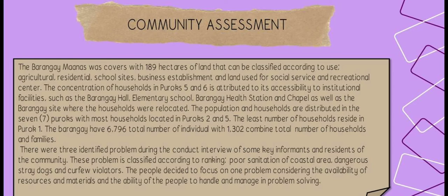Three problems were identified during the conduct and review with key informants and residents of the community, classified according to ranking. First is the poor sanitation of a coastal area. Next is dangerous stray dogs, which is very common in the community. Lastly is the arising cases of curfew violators. The people decided to focus on one problem considering the availability of resources and the ability of people to handle and manage problem solving.